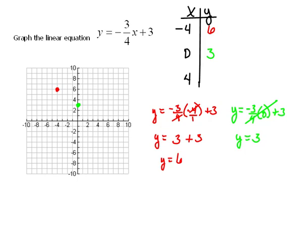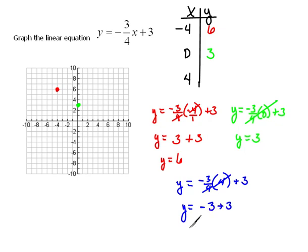Let's do this last one. If I were to put in 4 for my x value, y would equal negative three-fourths times 4 plus 3. Let's look at signs first: negative times a positive is a negative. And we've got 4 on top and bottom, so that's just negative 3 plus 3, which is 0. So when we use 4 for our x, we end up with 0 for the y. That point would be right here: 4 in the x direction, nothing in the y direction.